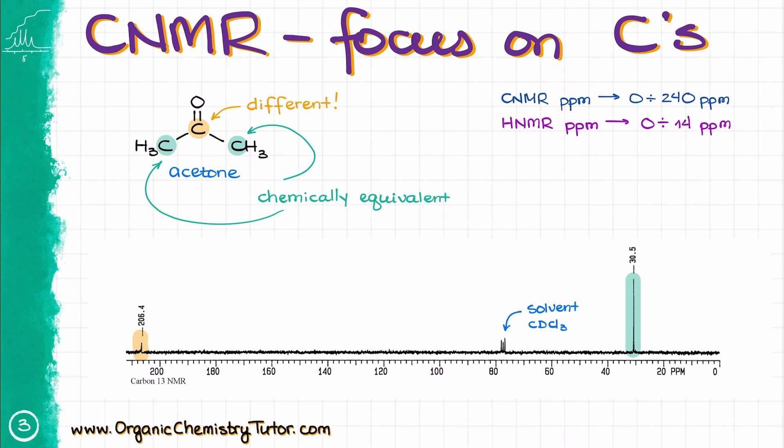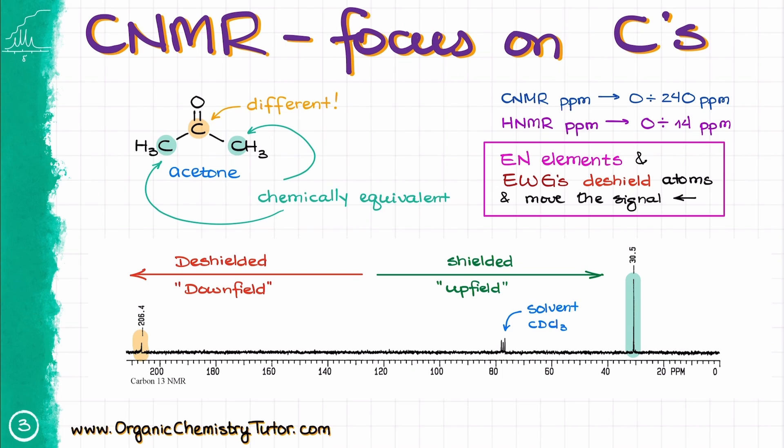We also see that the signals from our carbons are sitting in the different regions of the spectrum. The signals on the left side of our spectrum are deshielded, and we'll commonly refer to that part of the spectrum as downfield. The signals on the right side of the spectrum are shielded, and we'll refer to those as upfield.